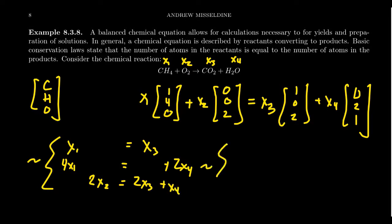For which then when we put in the standard form, we put all the variables on the one side. You're going to get X1 minus X3 is equal to 0. You're going to get 4X1 minus 2X4, that's equal to 0. And then you're going to have 2X2 minus 2X3 minus X4 is equal to 0.